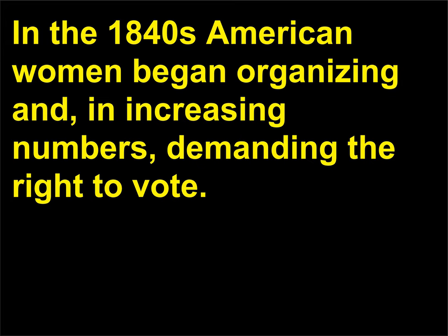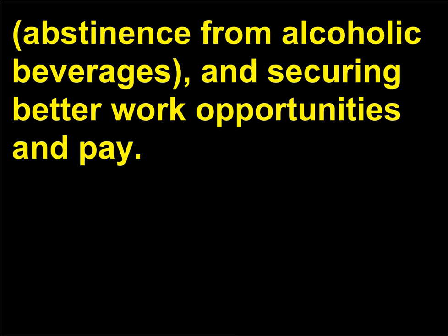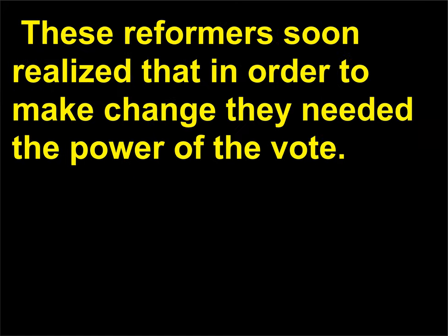When did the American suffragist movement begin? In the 1840s American women began organizing and, in increasing numbers, demanding the right to vote. The movement was started by women who sought social reforms, including outlawing slavery, instituting a national policy of temperance — abstinence from alcoholic beverages — and securing better work opportunities and pay. These reformers soon realized that in order to make change they needed the power of the vote.